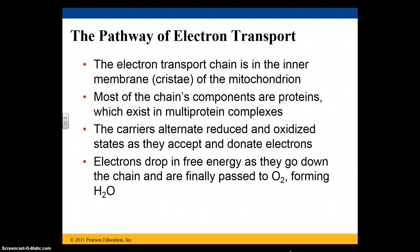Most of the chain's components consist of proteins, and those are going to exist in multi-protein complexes, meaning there's going to be more than one protein. The carriers alternate between reduced and oxidized states as they accept and donate electrons, and the electrons drop in free energy as they go down the chain. Eventually that gets passed to O2, which is our final electron acceptor, and water is formed.